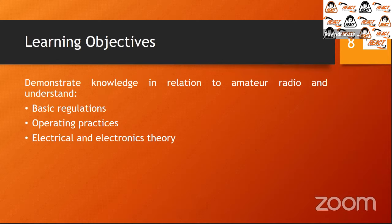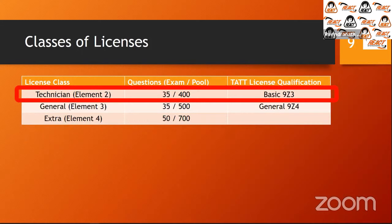The learning objectives for this course cover three specific areas: basic regulations — one of the main reasons there is an exam for amateur radio — operating practices, and electrical and electronic theory. We are here concerned with the technician class, also known as element two, because that's the name of the exam. There is a question pool associated with each class. For the technician class, there are approximately 400 questions in the pool, of which you will get 35 questions on the actual exam.